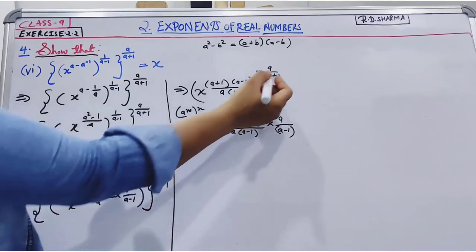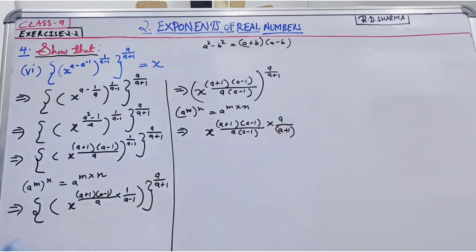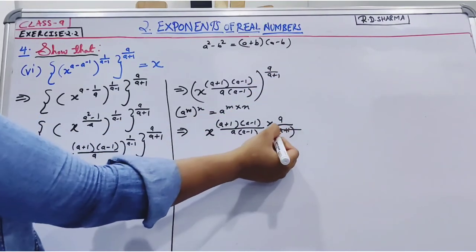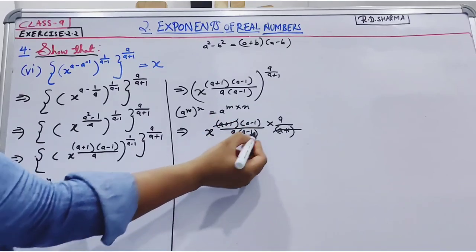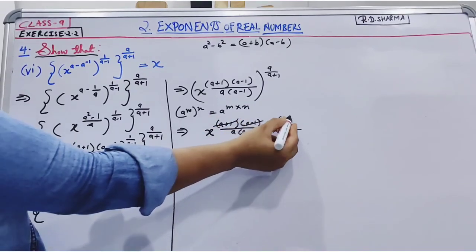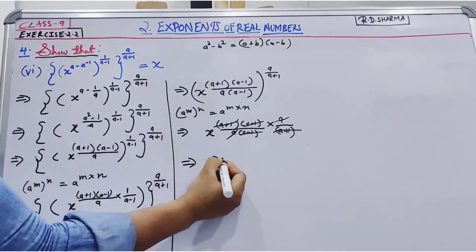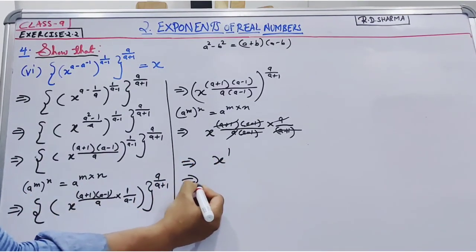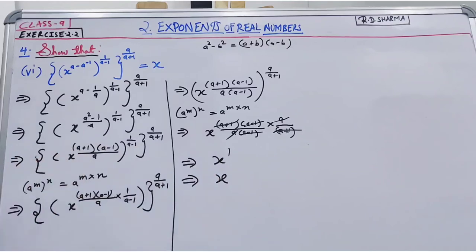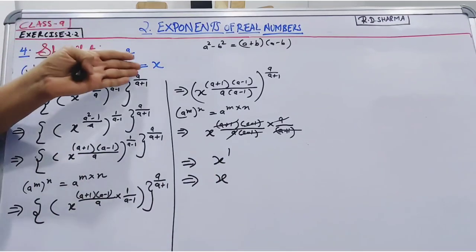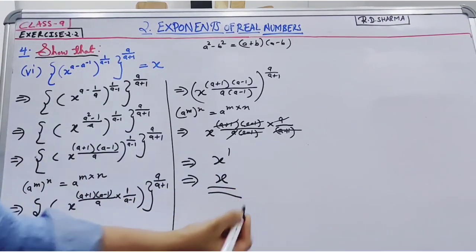So this is a plus 1. Here a plus 1, below we also have a plus 1, this cancels out, this one also cancels out, and a cancels out. So x to the power will be 1, so this equals x. So we have proved that our left hand side is equal to right hand side, which is x.